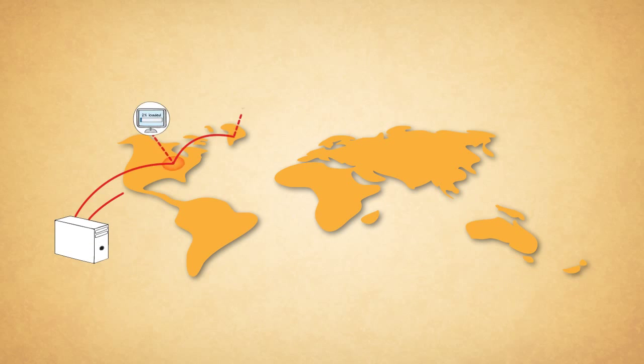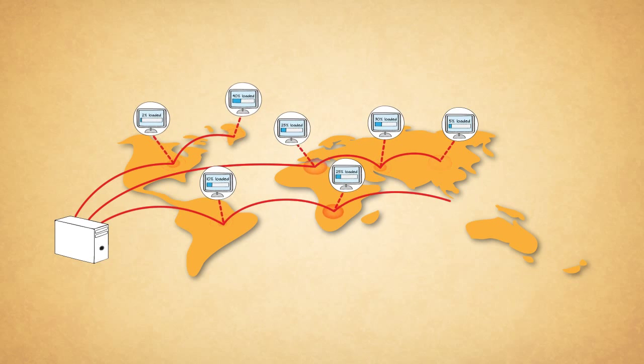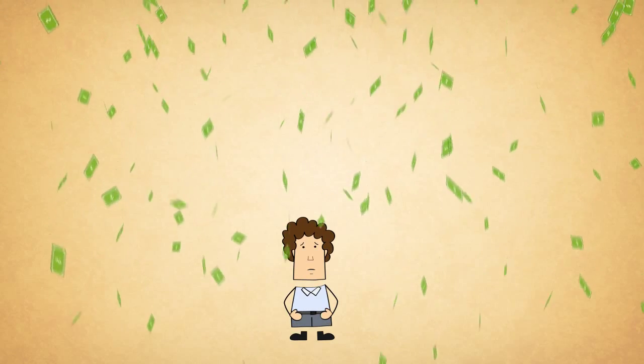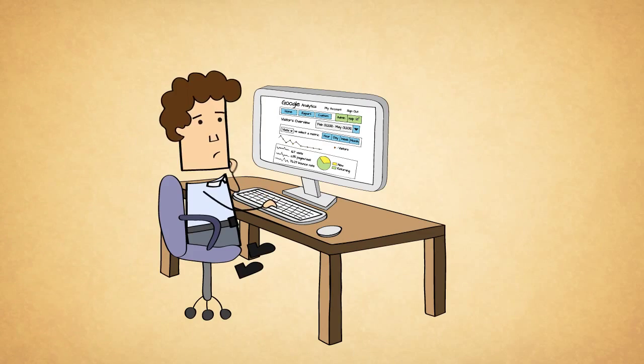He tells you that your website is not loading fast enough in other countries. And to solve this, you need to have a content delivery network in place that'll help people access information fast from servers near their locations. Which means, you guessed it, more expenses.